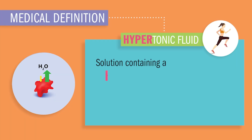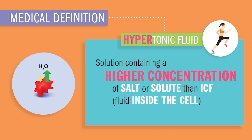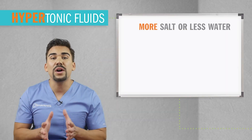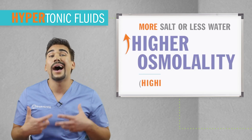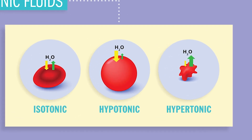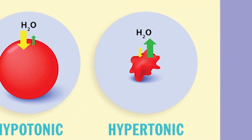A hypertonic solution is a solution containing a higher concentration of salt or solute than our ICF — fluid inside the cell. They're basically very thick, concentrated fluids inside the IV bag, thick like mud. Hypertonics have more salt and less water, so they're more thick solutions having a higher osmolality. This means hypertonic solutions will have higher osmotic pressure, pulling fluids toward themselves like a magnet, pulling fluid out of the cell, making them very skinny.